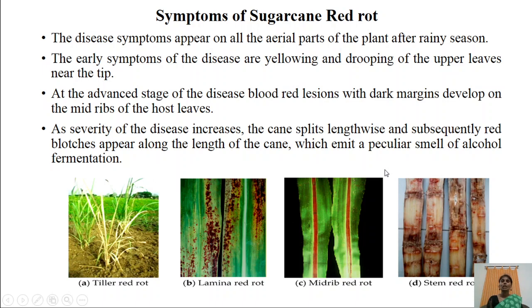Coming to the symptoms of sugarcane red rot — the disease symptoms appear on all aerial parts like stem, leaf, and leaf sheath. Symptoms develop after the rainy season, where the early symptoms are yellowing and drooping as a result of infection by the pathogen. The stem of the sugarcane appears yellowish in color and the upper leaves near the tip start to droop down.